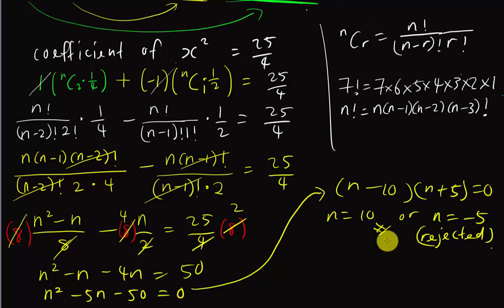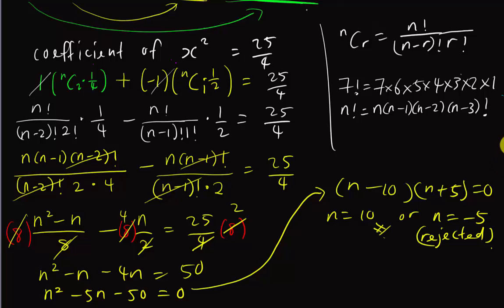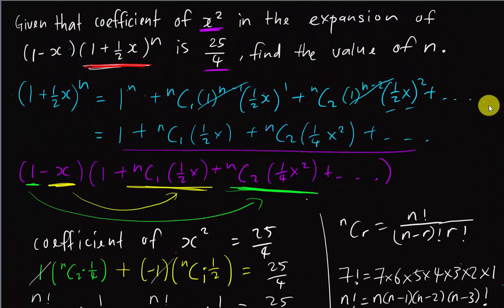For this kind of question, finding the coefficient isn't really difficult, but because the power is n you need to know how to expand nC2 and nC1 using the formula, simplify, and then solve the resulting quadratic equation to get the values of n. I hope this video gives you some basic idea of how to solve this kind of question. If you have any comments, please post on my YouTube or Facebook. Thanks for watching.